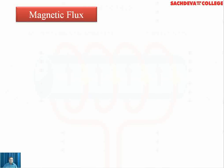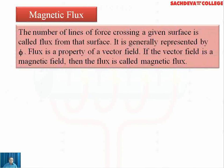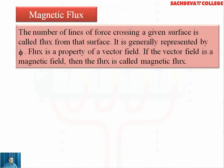First of all, we come across magnetic flux. Magnetic flux is basically the number of lines of forces, or magnetic lines of forces, crossing a particular area. The unit of magnetic flux can be taken as Weber or Maxwell. The number of lines of force crossing a given surface is called flux. It is generally represented by phi. Flux is the property of a vector field. Wherever we use the term flux, we are referring to the magnetic lines of forces.